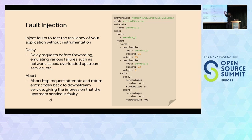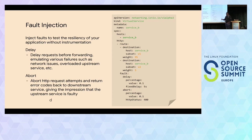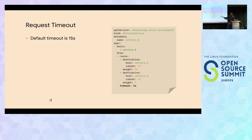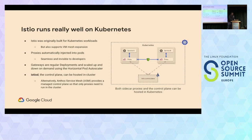You can also do fault injection. For example, you can say: introduce a five-second delay on 0.1% of my traffic to service B, so you can see how the client reacts when there is a delay on the new version of the service. And you can do timeouts and a bunch of other interesting things.